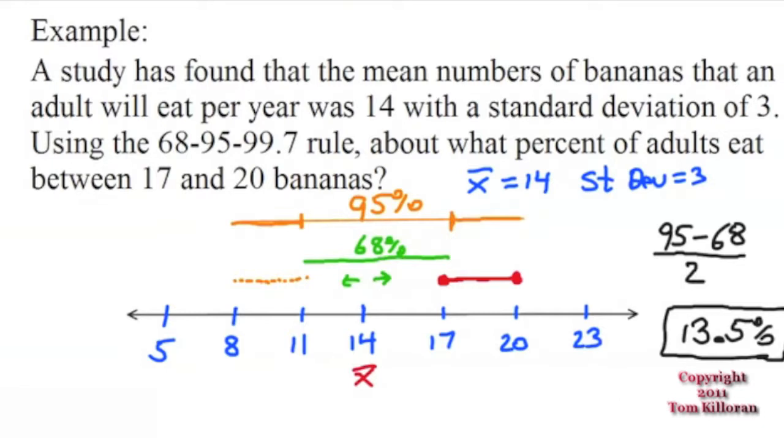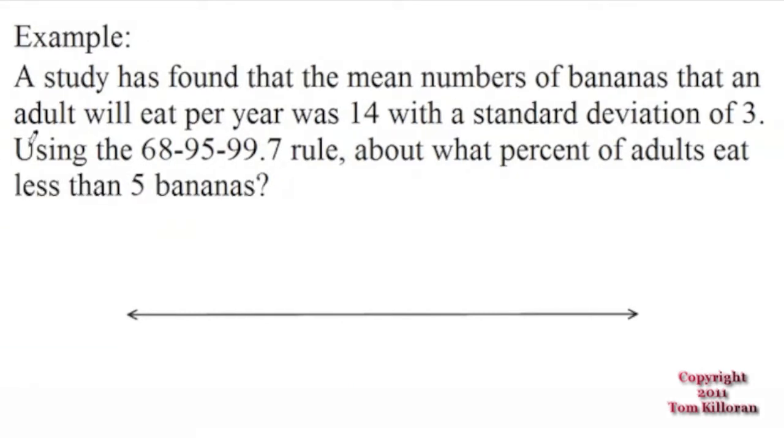How about another example? Same idea, the bananas with a mean of 14 and a standard deviation of 3 and still using this nice 68-95-99.7 rule. And what I want to know is what percentage of adults eat less than 5 bananas.